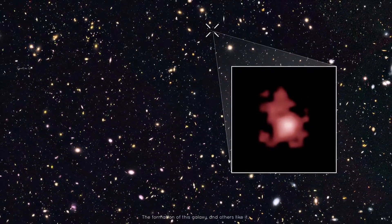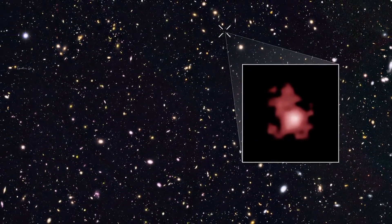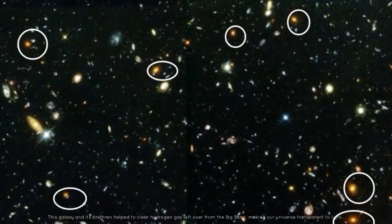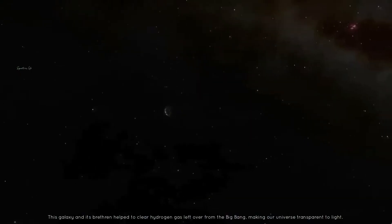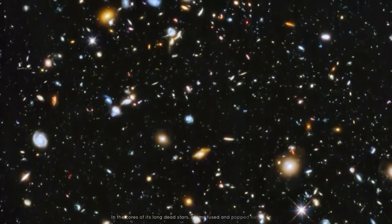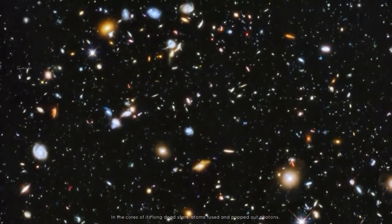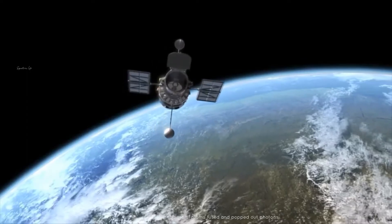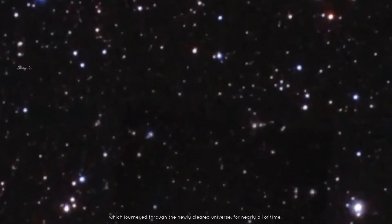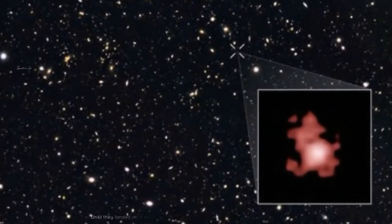The formation of this galaxy and others like it was a momentous event in cosmic evolution. This galaxy and its brethren helped to clear hydrogen gas left over from the Big Bang, making the universe transparent to light. In the course of its life, dead stars fused atoms and produced photons which traveled through the newly cleared universe for nearly all of time until they landed on a telescope's sensor, which converted them into a small speck of light.